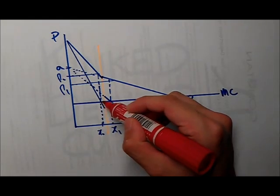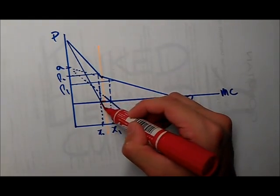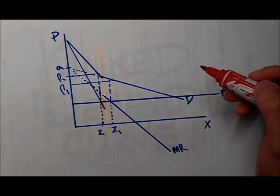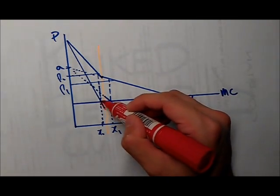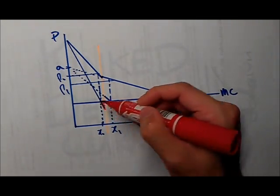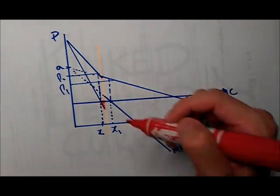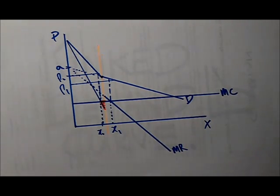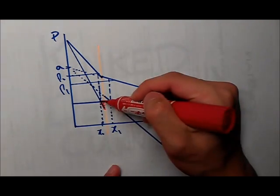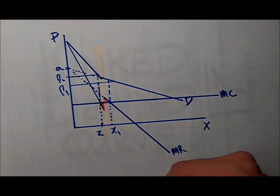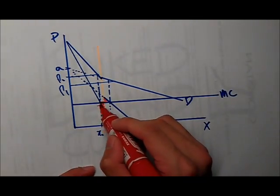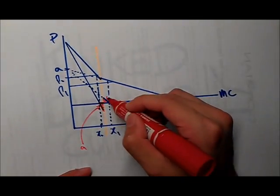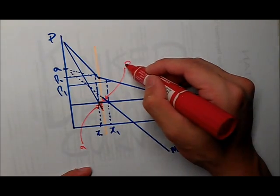As you can see this part being the marginal cost and this part being the marginal revenue. When the marginal cost is on top of the marginal revenue, we have an area of loss over here. Area of loss. And where the MR is on top of the MC, we have an area of gain which is over here.